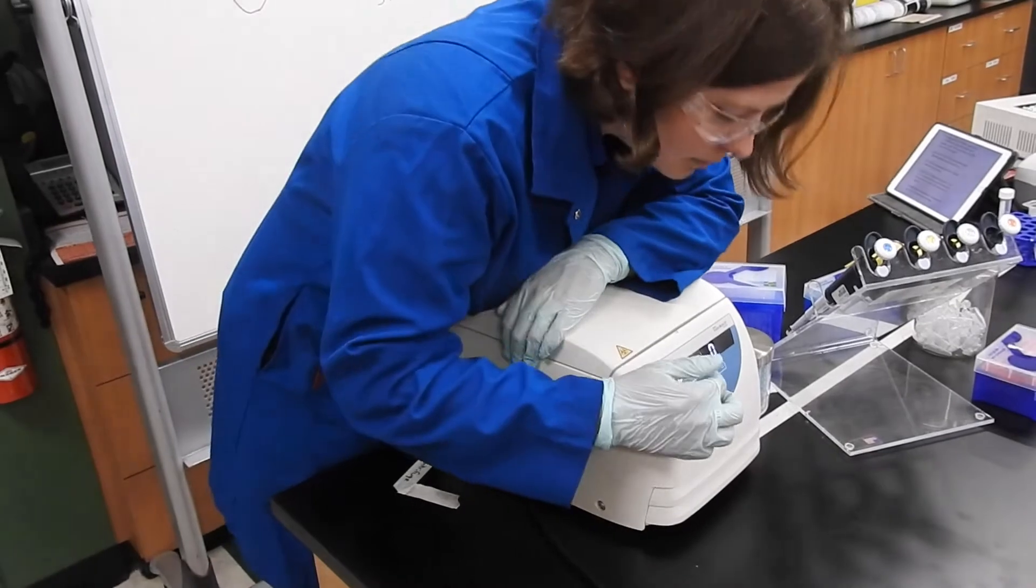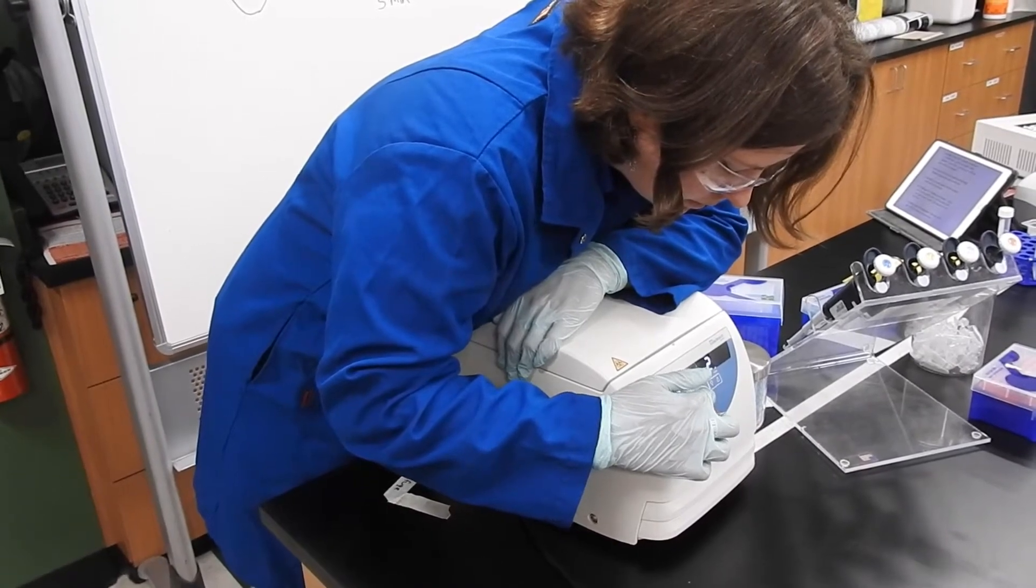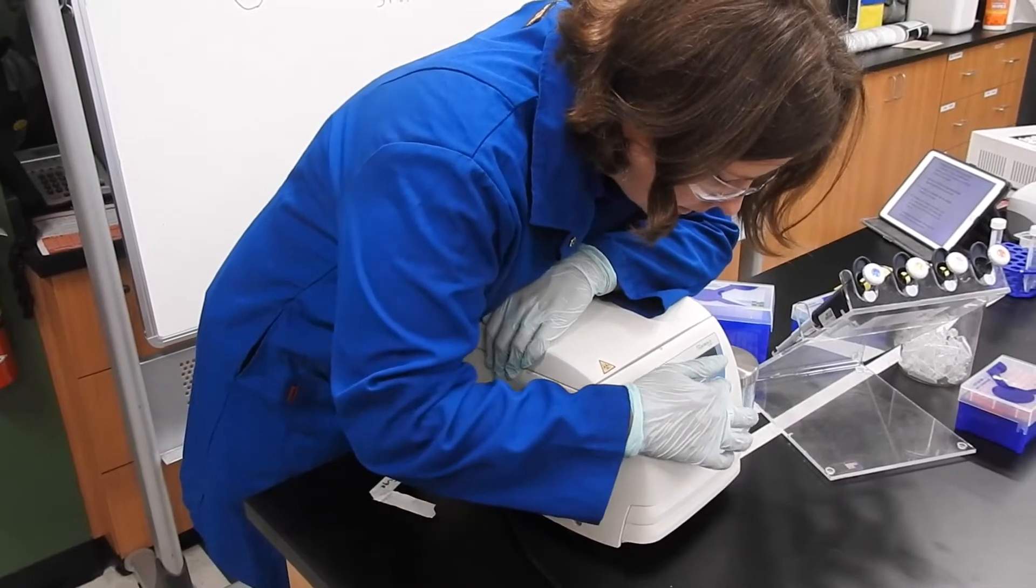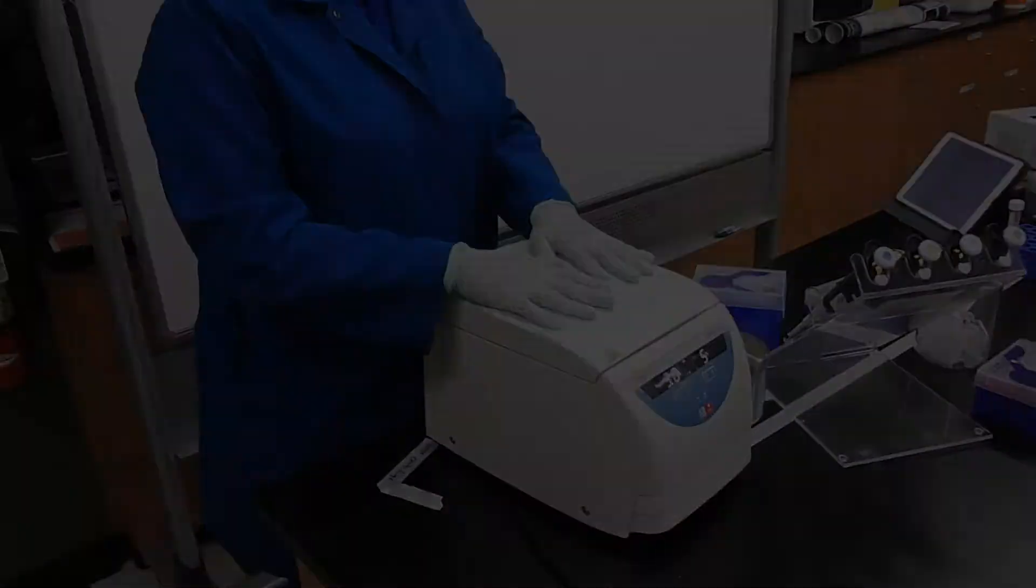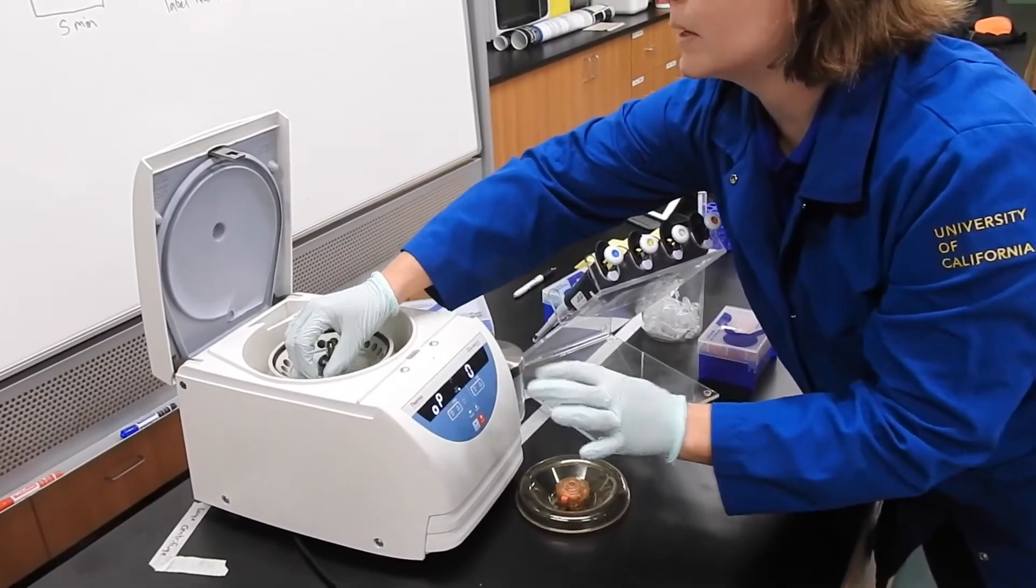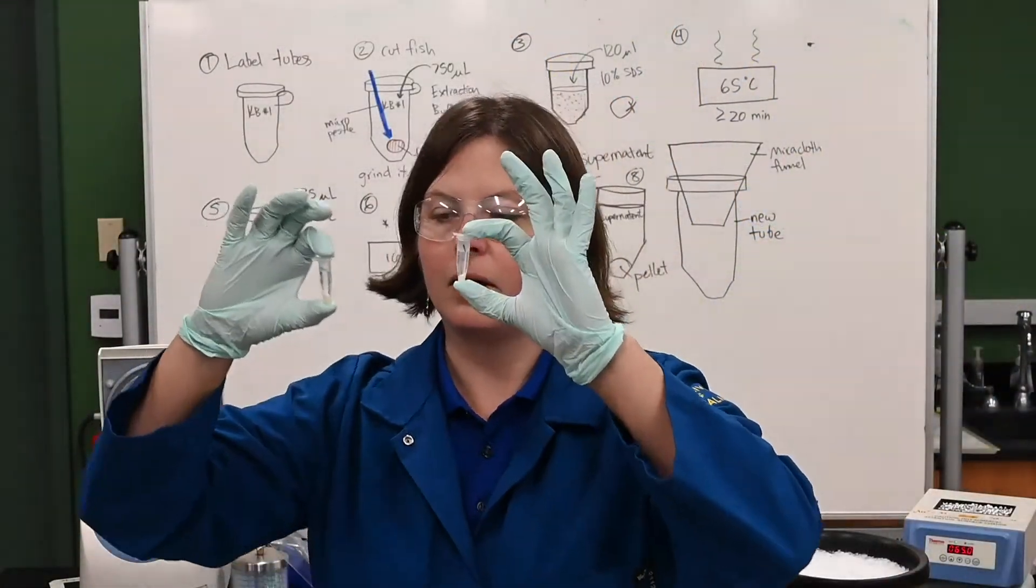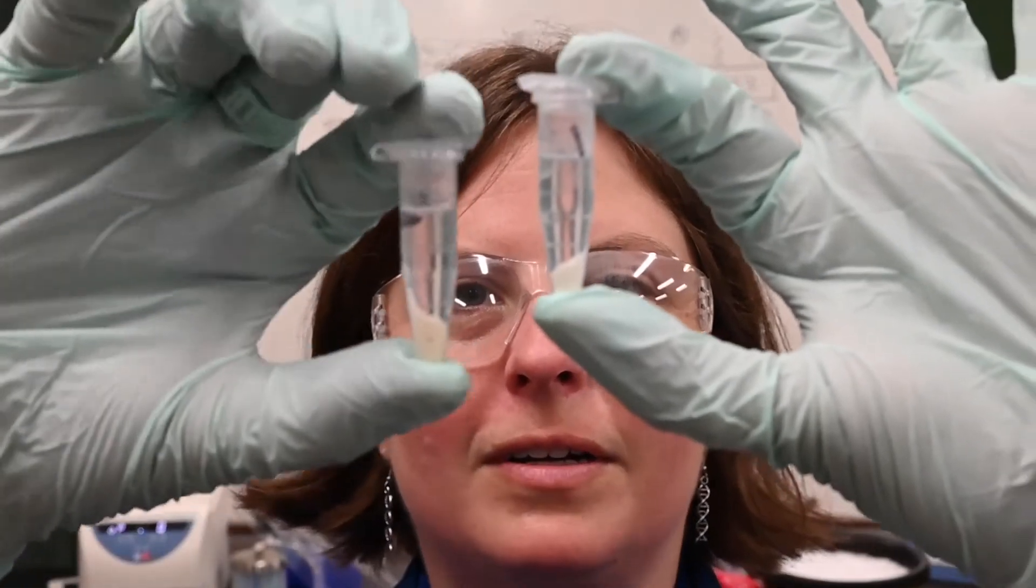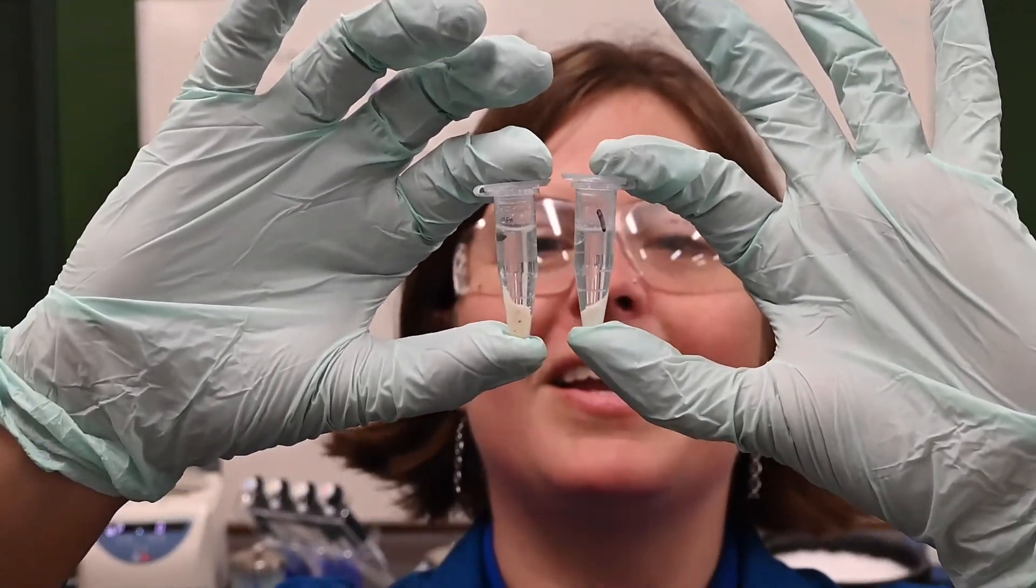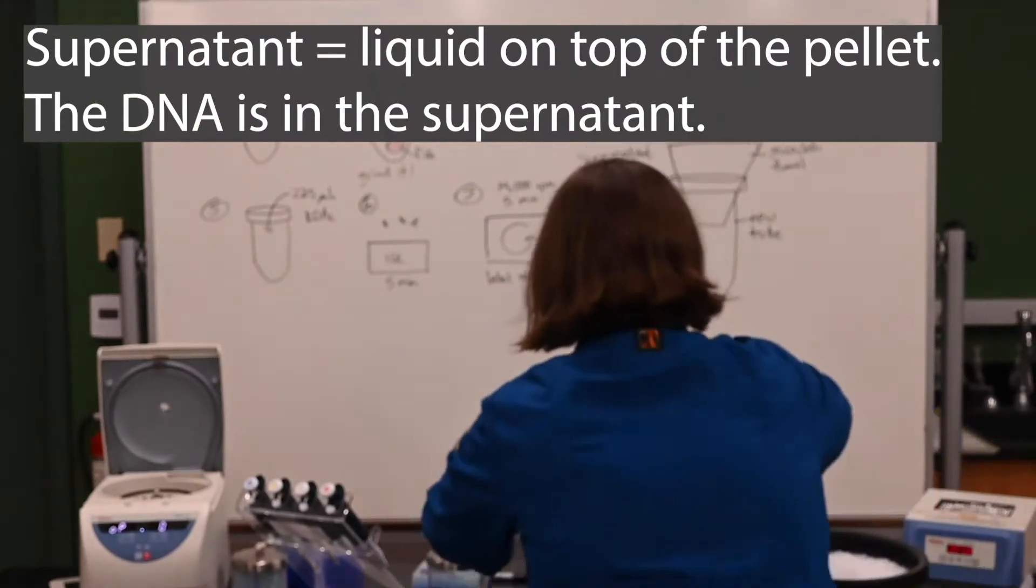All right, so lid back on. And I set this to 14,000. So you can see there's this solid white-ish gunk at the bottom. That's our pellet. So that's the protein, the lipids. And then we have our liquidy, now it looks very clear. That's our supernatant with our DNA. So awesome. Worked great. I'm going to carefully put these down before I drop them.